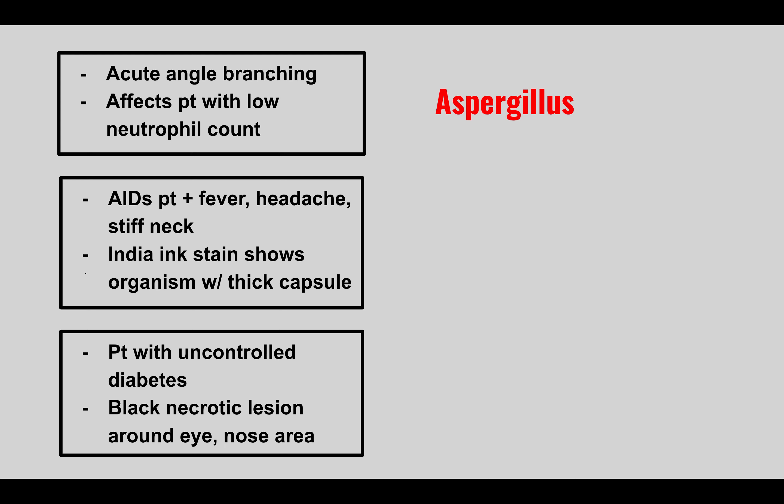The next patient has AIDS and then gets a fever, headache, and stiff neck. We see an India ink stain that shows an organism with a thick capsule. So this is Cryptococcus neoformans, and this causes cryptococcal meningitis — that's why we get meningitis symptoms like fever, headache, and stiff neck. Very commonly for this pathogen, they show a picture of the India ink stain showing these organisms with a really thick halo-looking appearance, which represents that thick capsule.